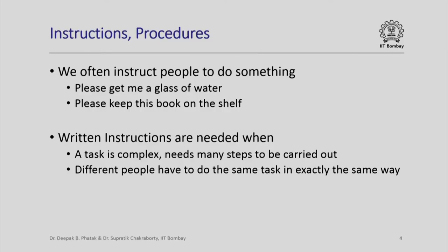We often instruct people to do something. For example, we say please get me a glass of water, or please keep this book on the shelf. Such instructions are verbally given; they are not complex tasks, and whatever we say in a simplified manner is very easily understood. Please understand that whenever we give such an instruction, the context is well understood by both the person who carries it out and by us. For example, when we say keep the book on the shelf, it is kept on the bookshelf, not on a shelf containing clothes or shoes. Simple instructions are given verbally and followed automatically in the correct fashion.